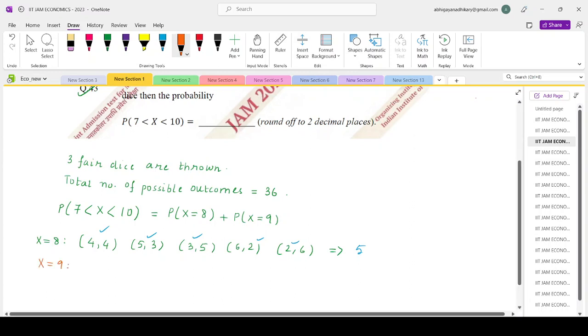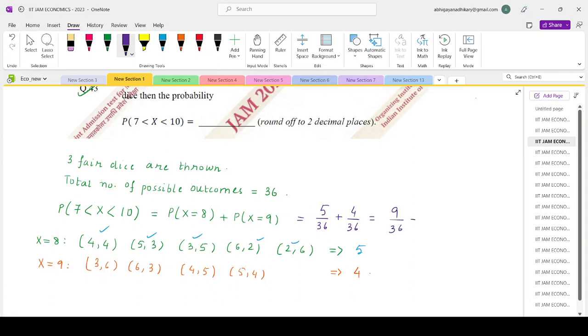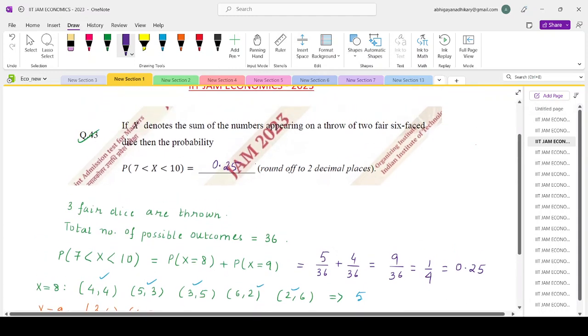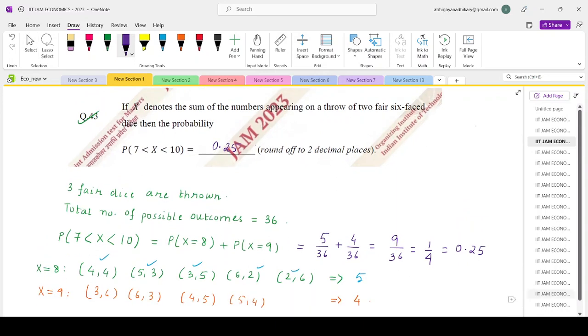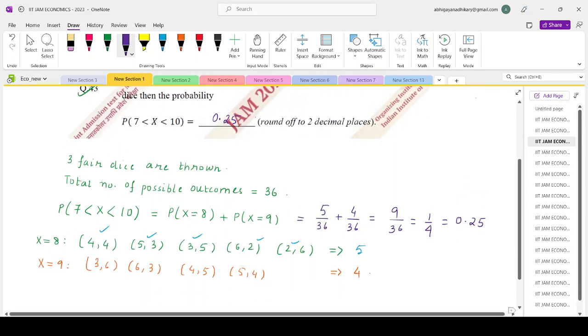If you look at X equals 9, the possible combinations would be (3,6), (6,3), (4,5), and (5,4), giving you 4 outcomes. So probability X equals 8 is 5/36 and X equals 9 is 4/36, so this gives you 9/36 = 1/4. That gives you your answer as 0.25. So this is your answer rounded off to two decimal places. Thank you everybody.